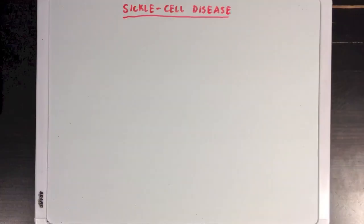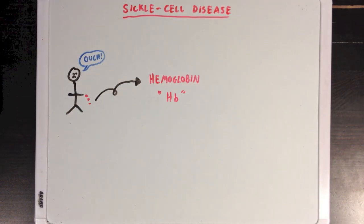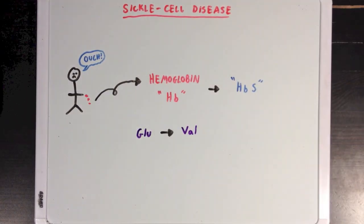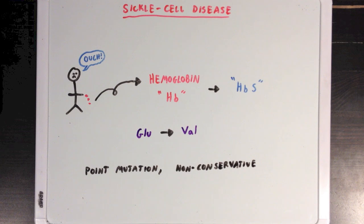Let's look at a quick example. Sickle cell disease is a disorder where hemoglobin, or HB, which is a protein found in human blood, is mutated into a less active form, which we'll call HBS. It results from a single glutamate residue being converted into a valine residue. We can classify this as a point mutation since only one DNA base is affected, but we can also say that it's a non-conservative missense mutation since glutamate is being swapped out for valine — glutamate is an acidic amino acid and valine is a non-polar one.